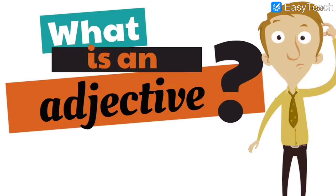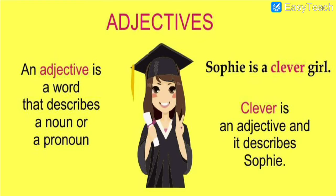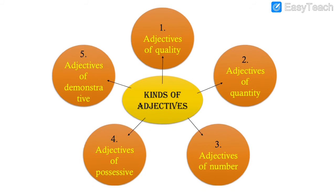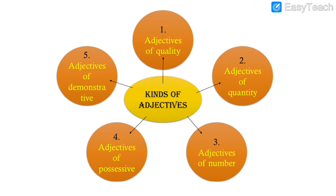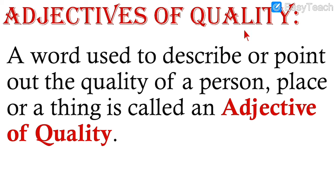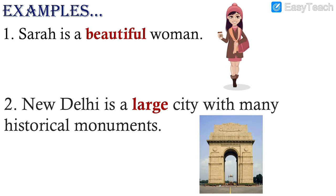In the previous video I had explained what is an adjective. We saw the example: Sophie is a clever girl — clever is an adjective. Then we learned different kinds of adjectives: adjectives of quality, quantity, number, possessive adjective, and demonstrative adjective. Adjective of quality describes in what manner — for example: beautiful woman, large city, heavy box, smart boy, intelligent girl.